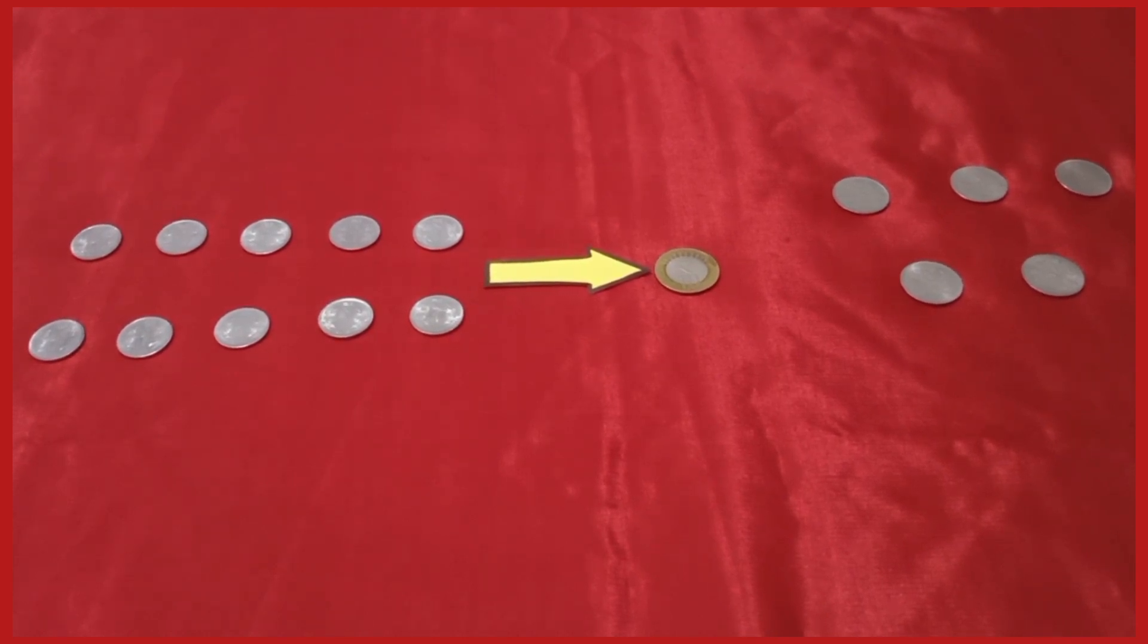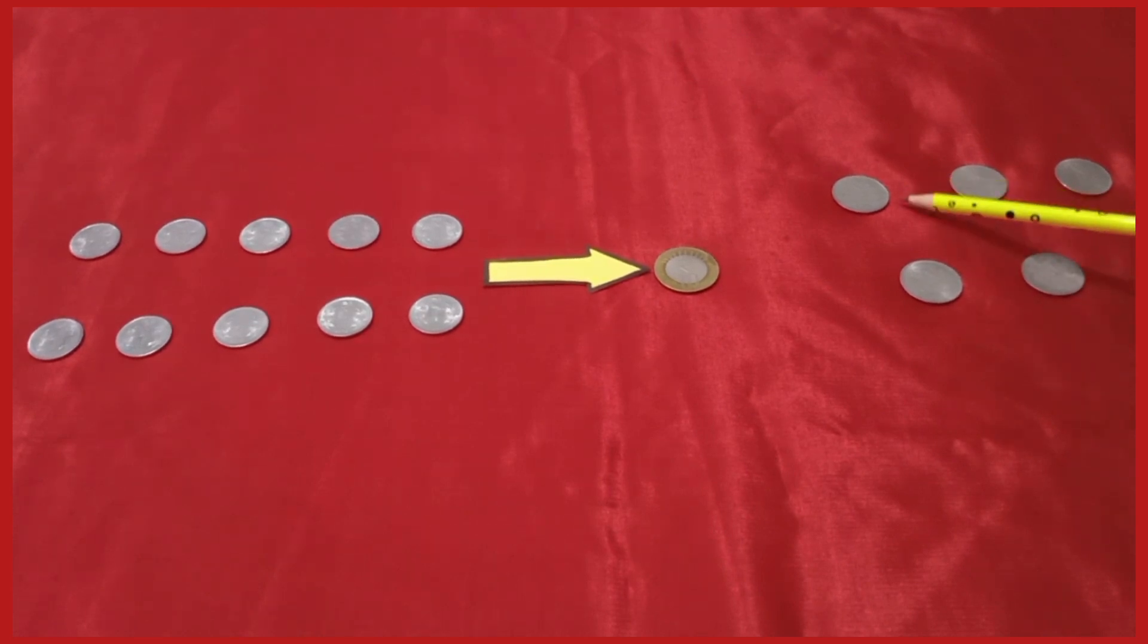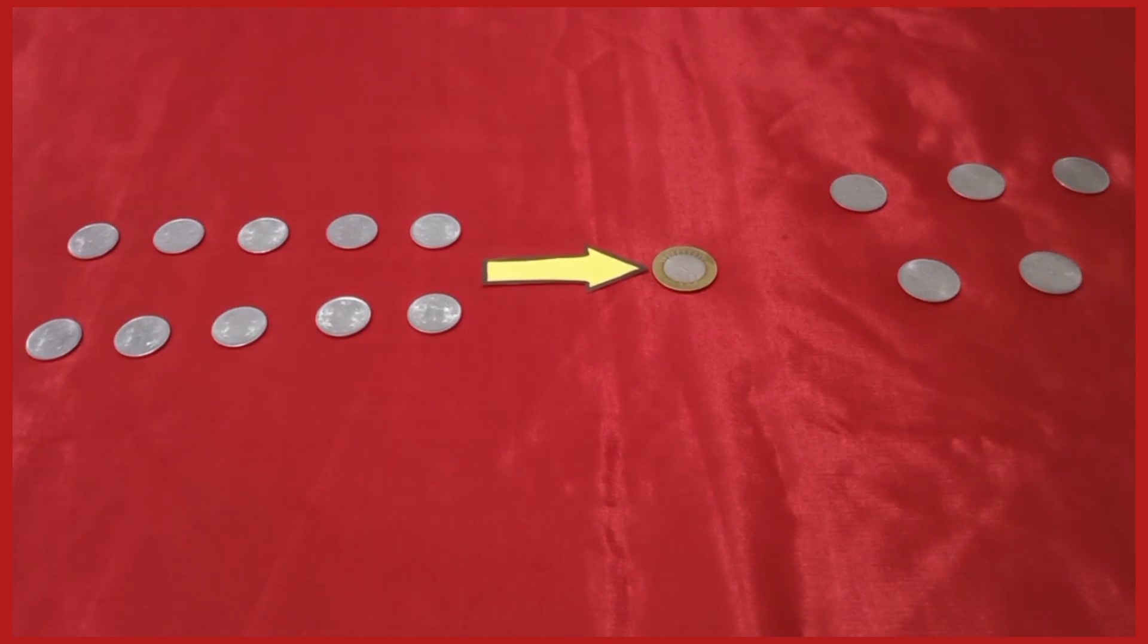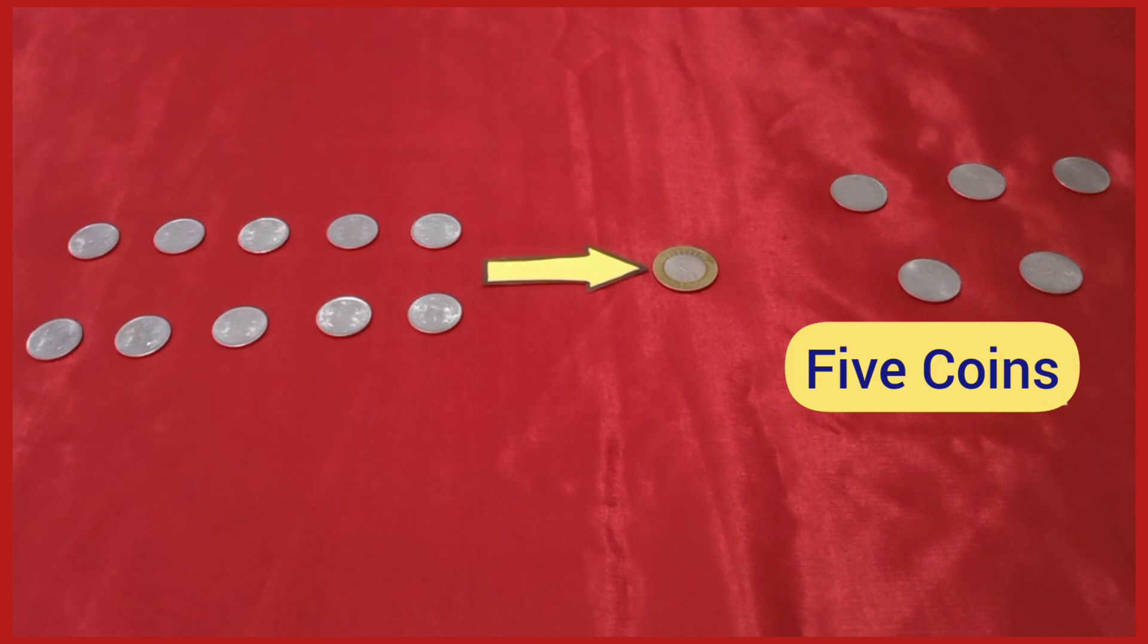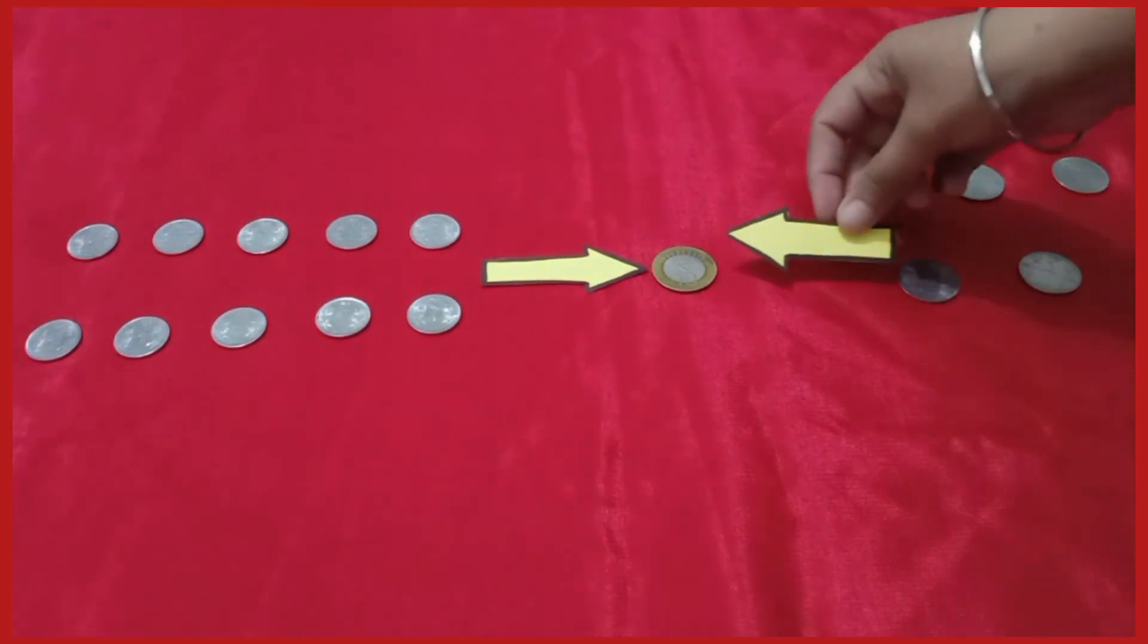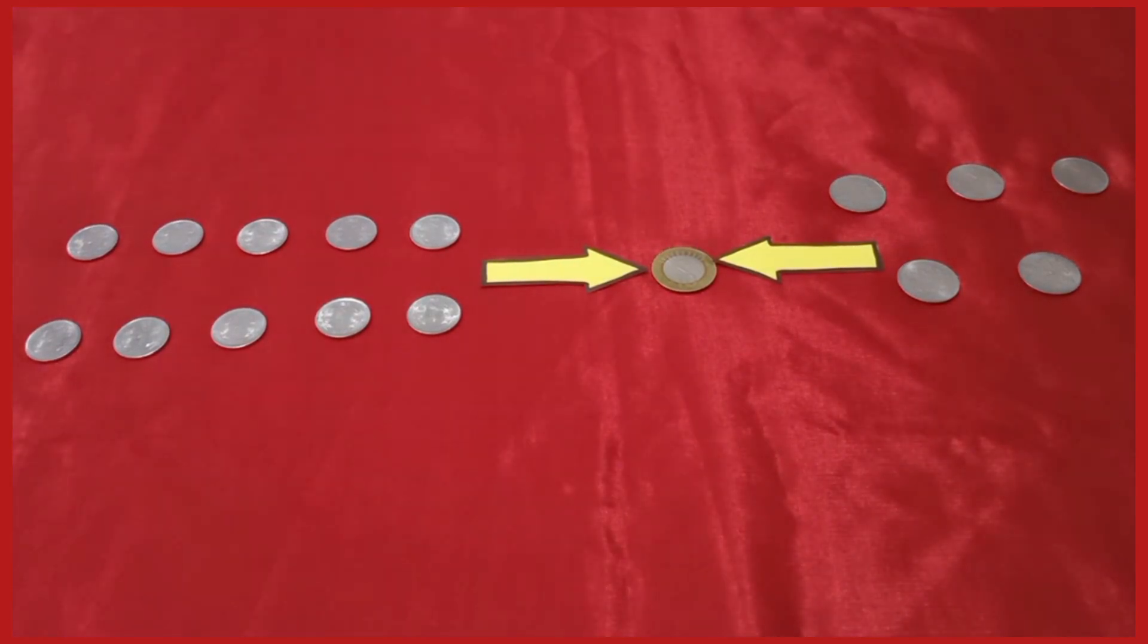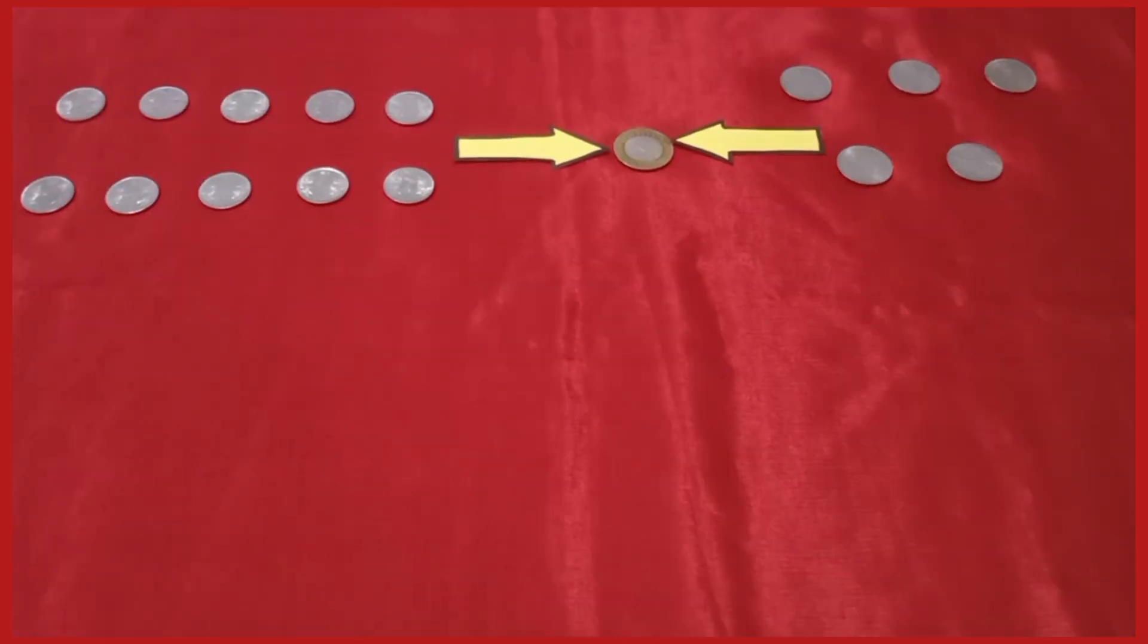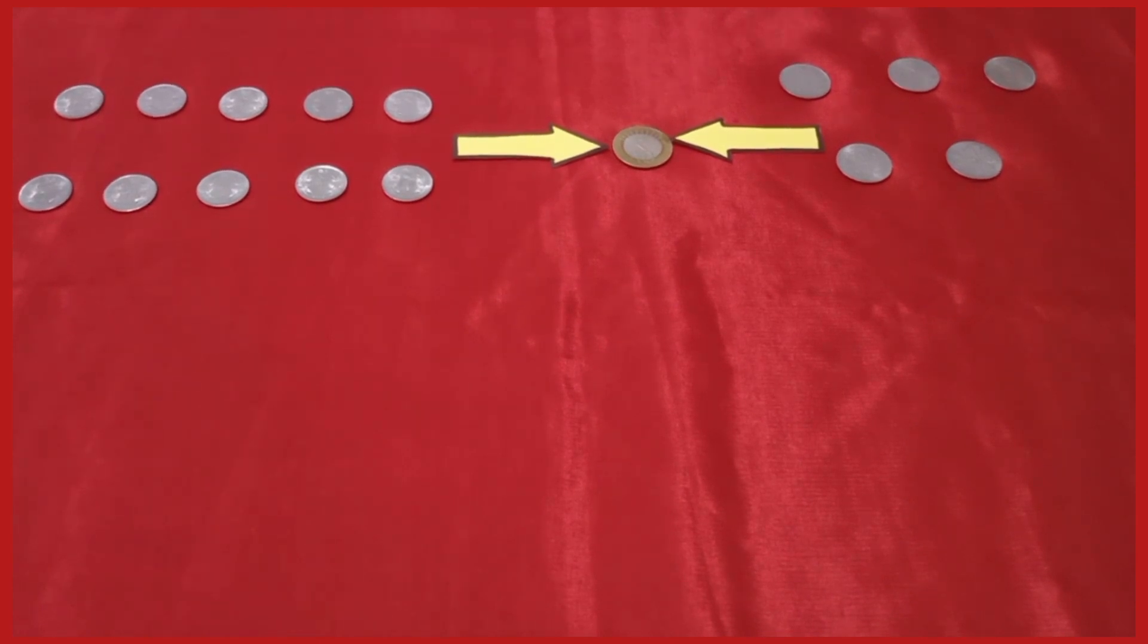It's 1, 2, 3, 4, and 5. So dear students, the value of 5 two-rupee coins is equal to 1 ten-rupee coin. So the value of 5 two-rupee coins is same as 1 ten-rupee coin.